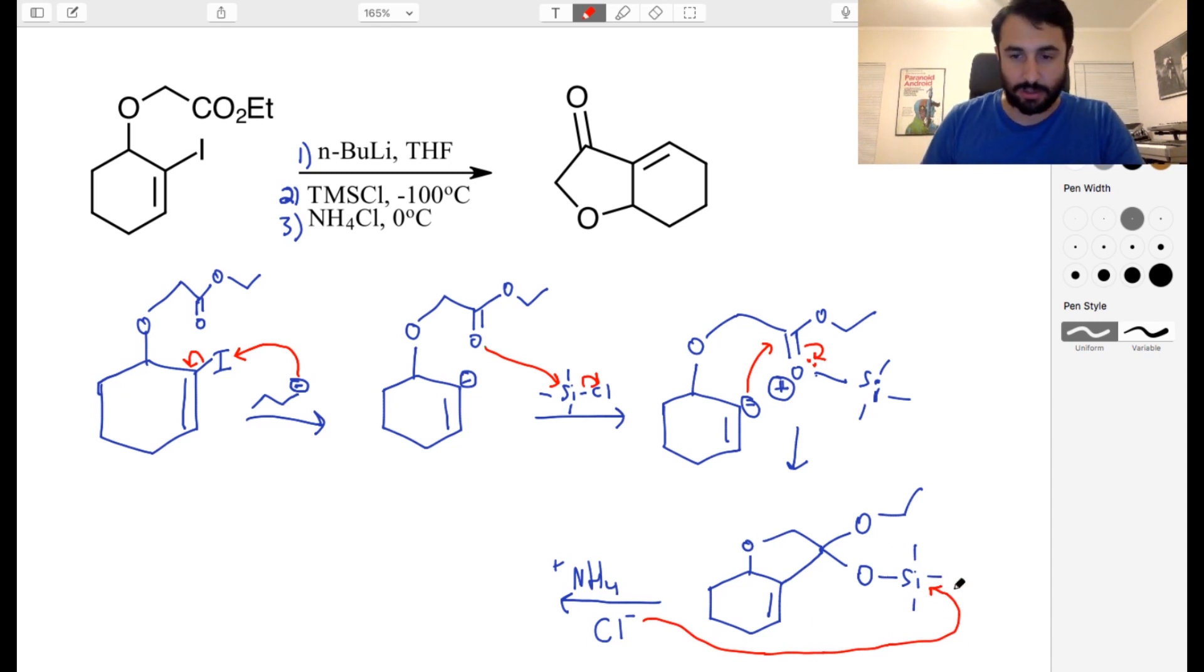We know that this is how we use halides to deprotect the silyl ethers. So we're going to attack silicon there. And now instead of just remaining on that oxygen, this can now go here, reform the carbonyl, kick off the ethoxy.